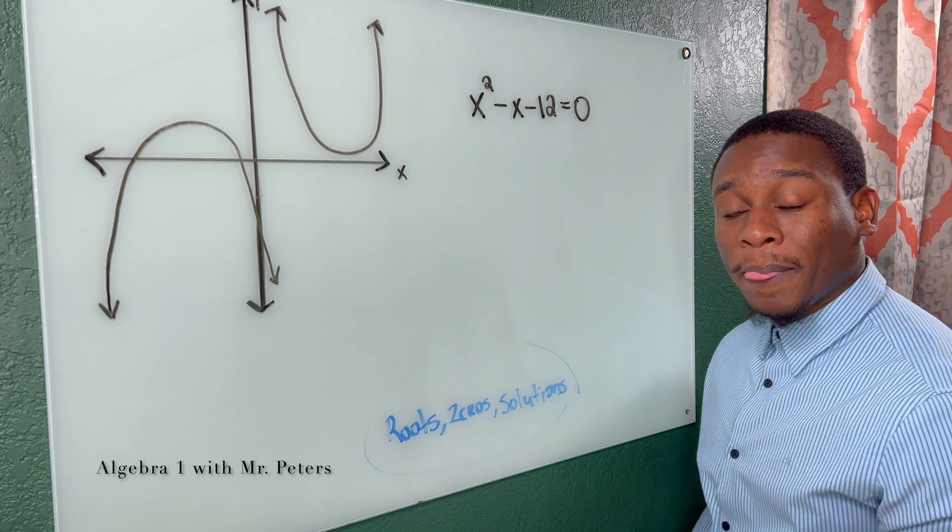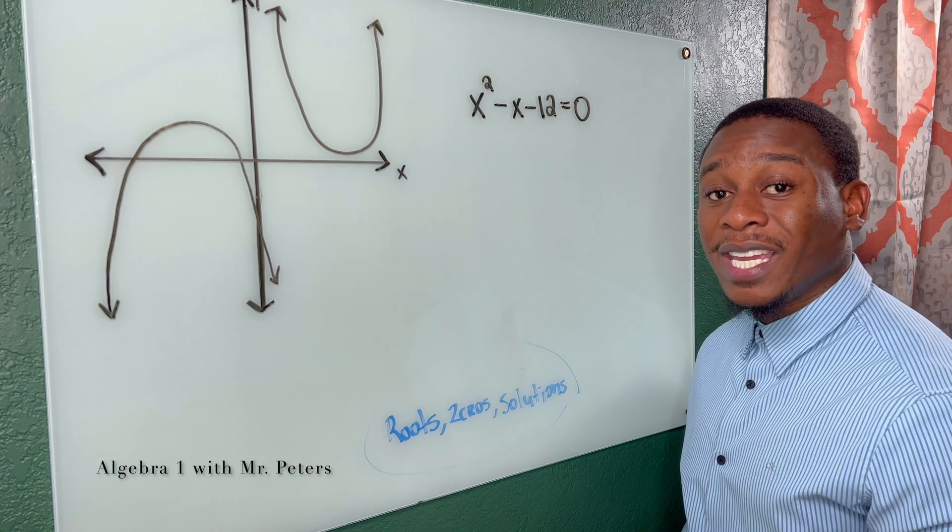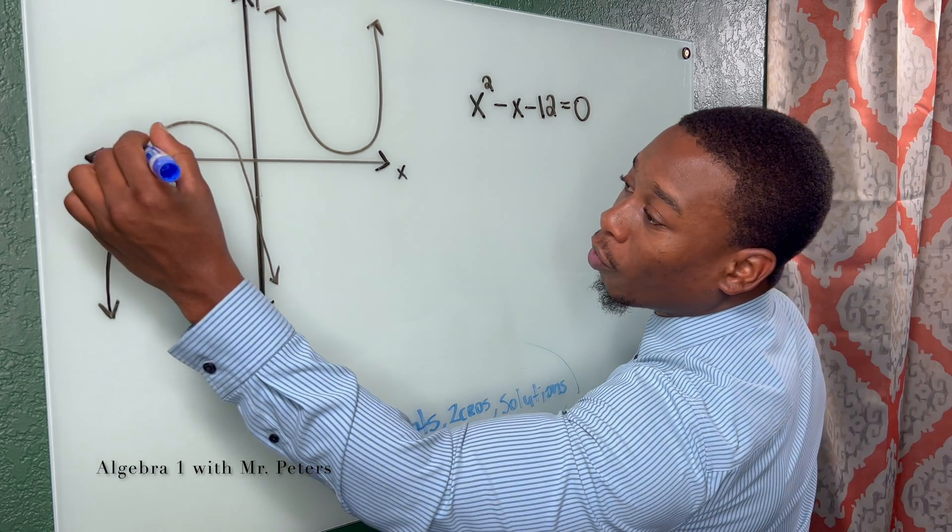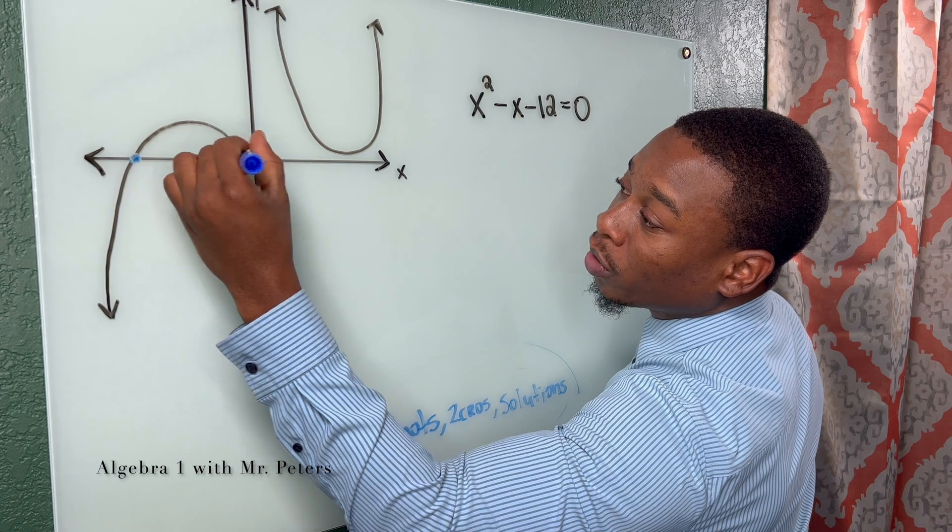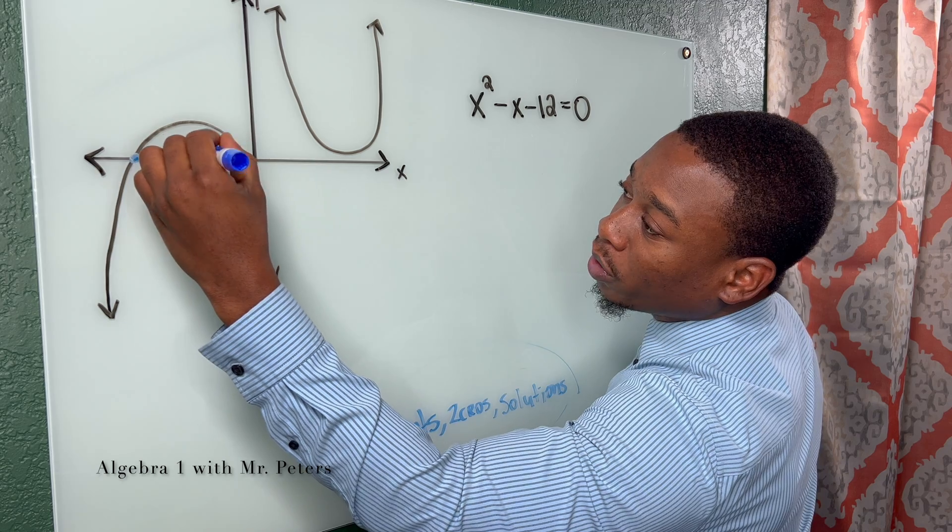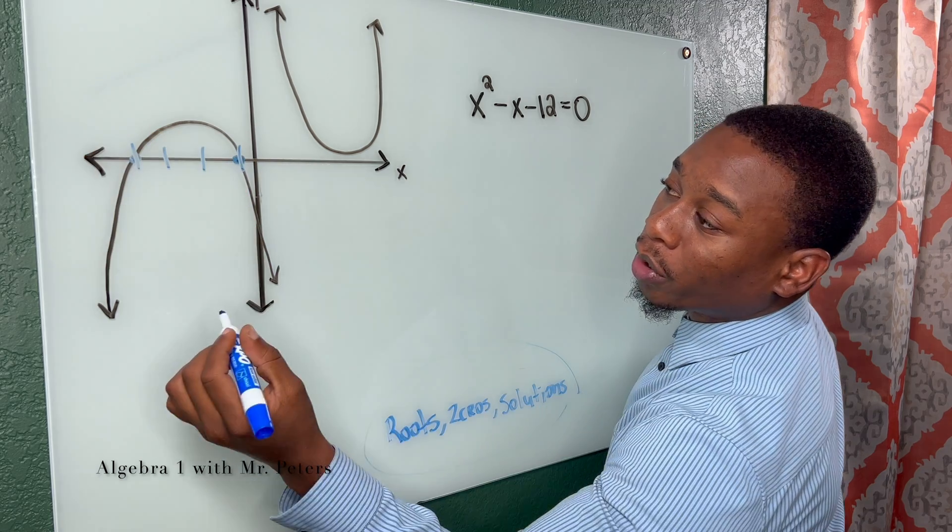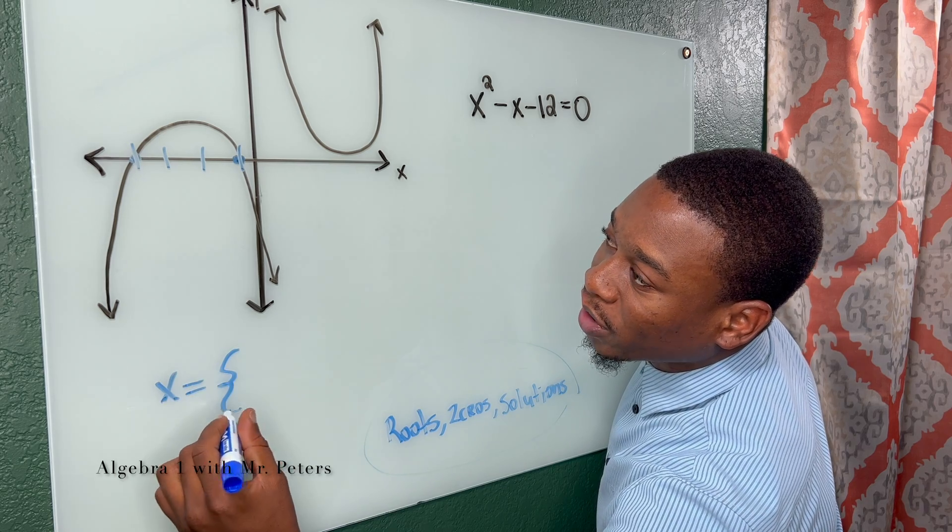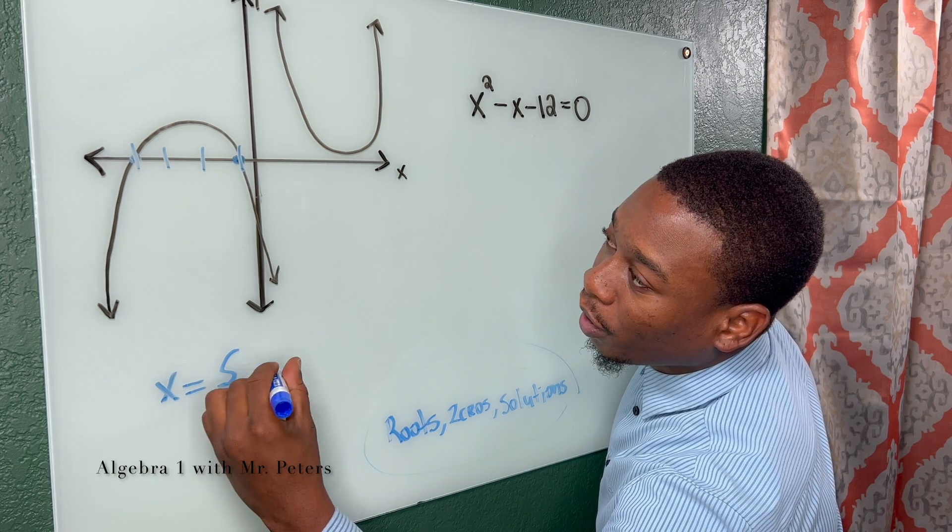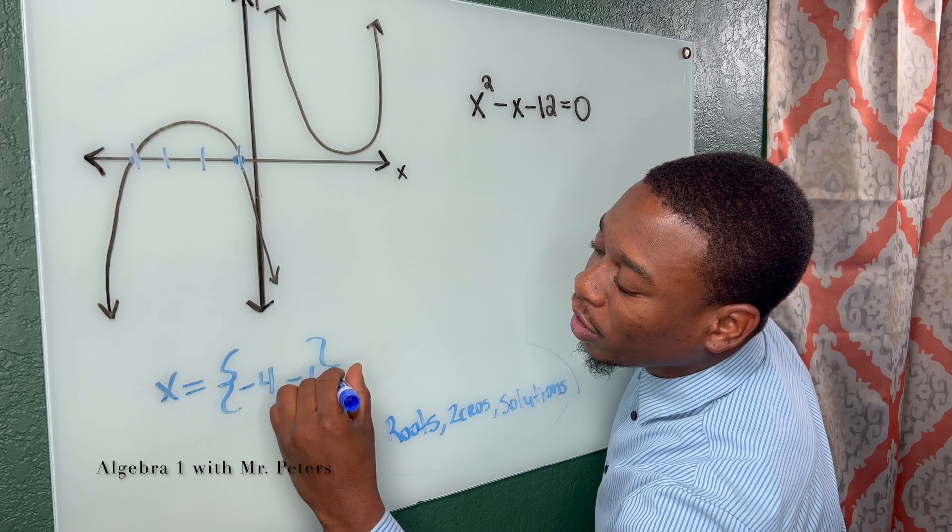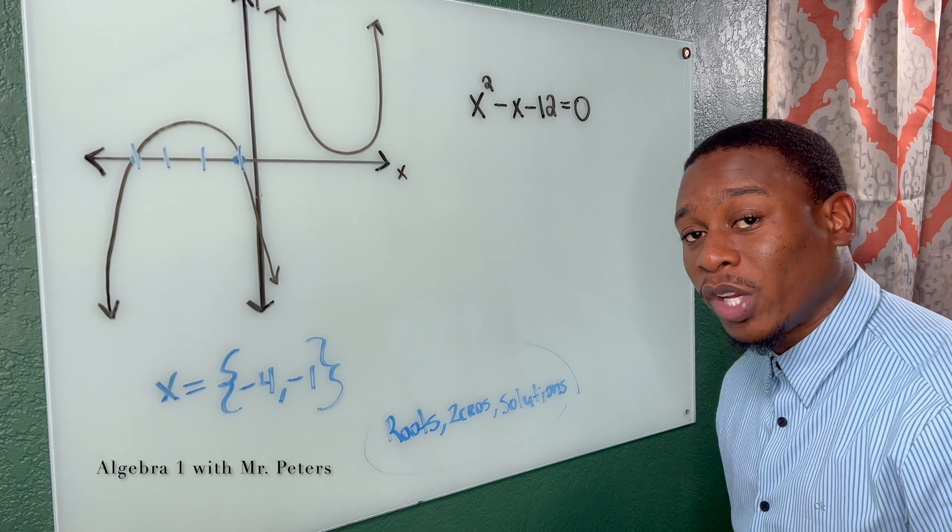And what we're dealing with is where the graph touches the x-axis or where it crosses. So right here, this would be a root and this would be a root. Let's say we label this, right? So that's one, two, three, four. We would say the solutions would be x is equal to, we'd have our braces, solution set, negative four comma negative one. So these are the solutions to the quadratic equation.